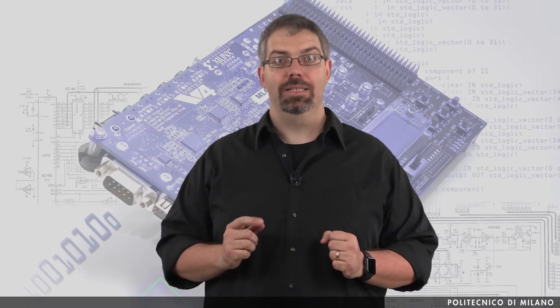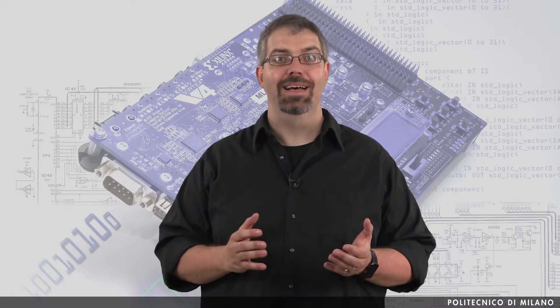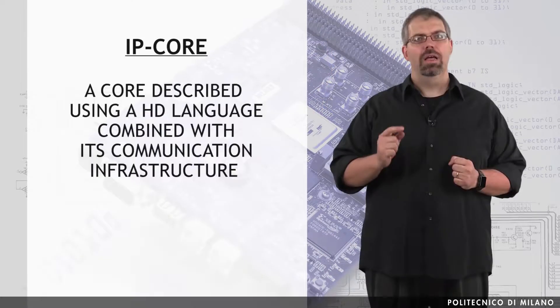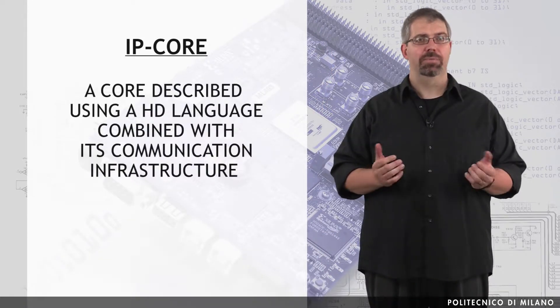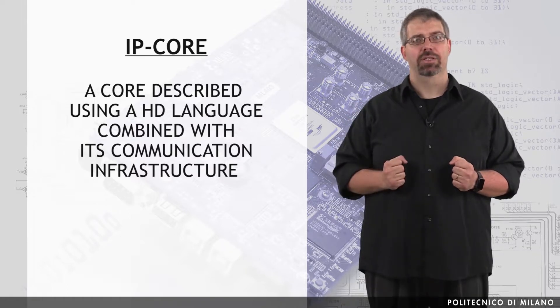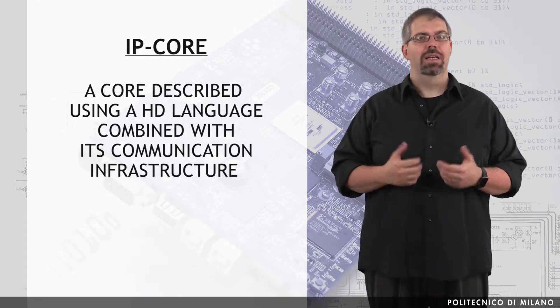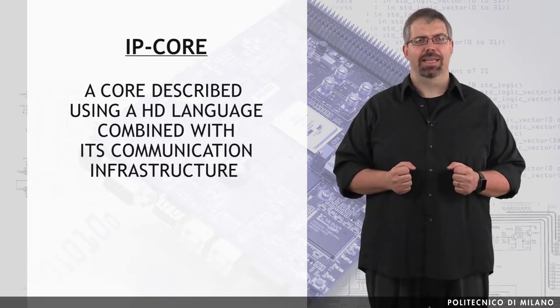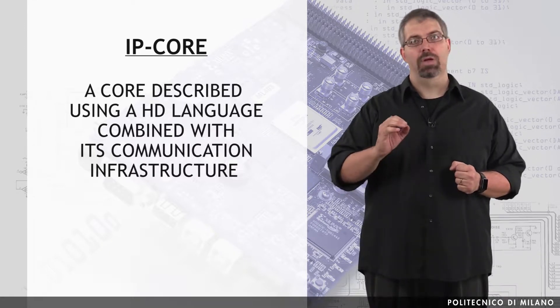Once a core has been defined, we need to integrate it into a system. This means that the pure functionality is not sufficient. We need to bind it with the proper communication infrastructure, because we need to send it data in order to have it properly working, and at the same time we need to collect back the produced data. A core capable of computing great functionalities is completely useless if we cannot provide it data and read back its results. From now on, a core described using a hardware description language combined with its communication infrastructure — a bus, a point-to-point connection, a network on chip — will be called an IP core, as in intellectual property core.